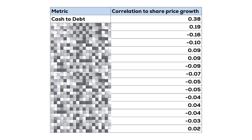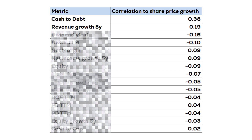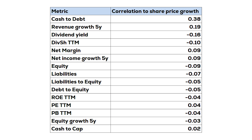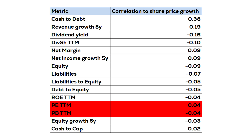The next metric on the list was the revenue growth for the previous five years — 2014 to 2019. In fact, if we look at all the metrics, we can see the traditional value ratios, the P/E and P/B ratios, are right near the bottom of the list. Neither one of them indicated at all whether the shares would rise over the next five years.